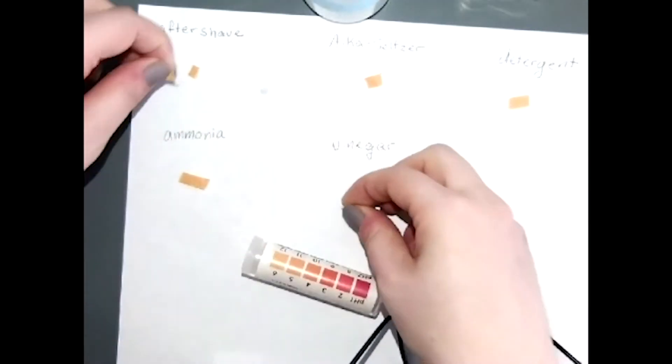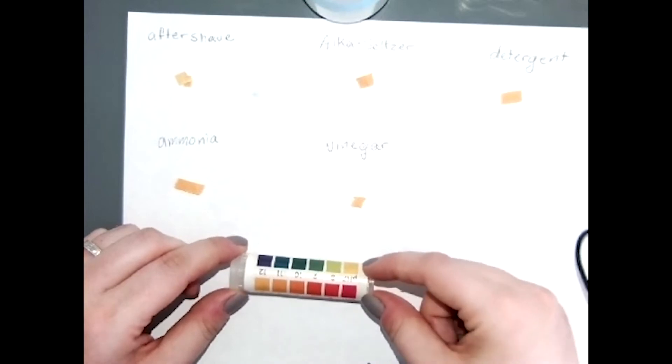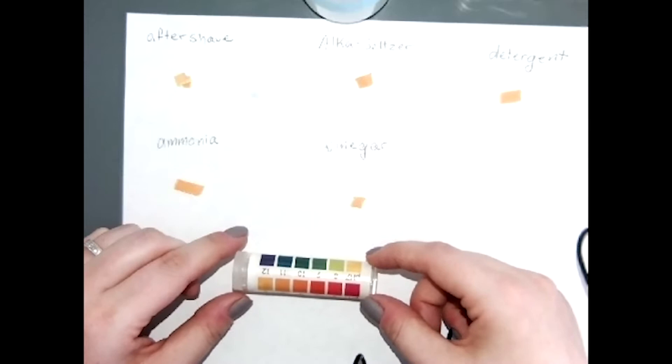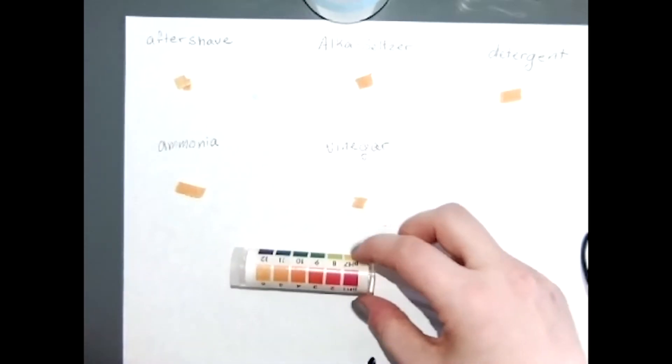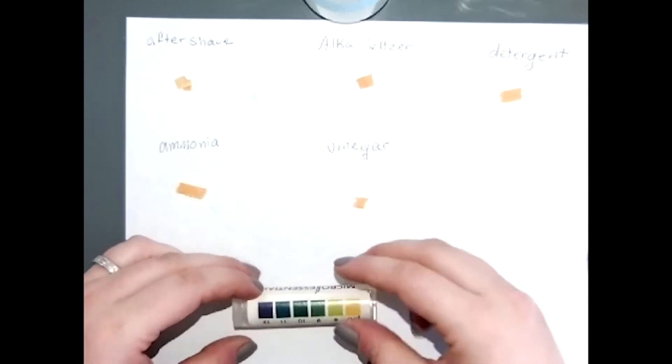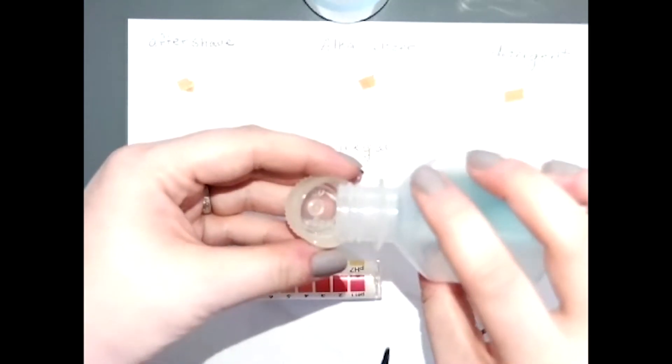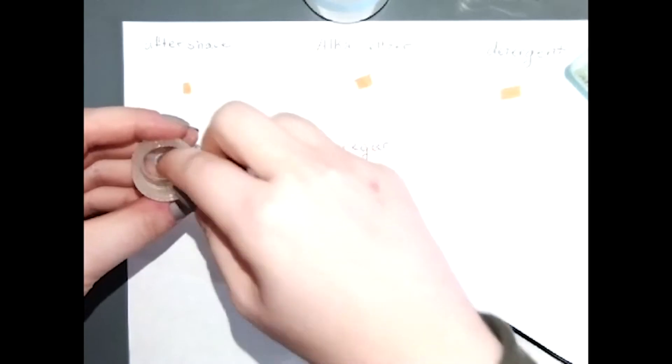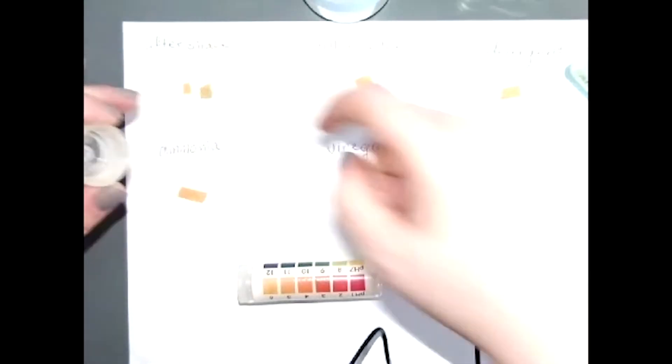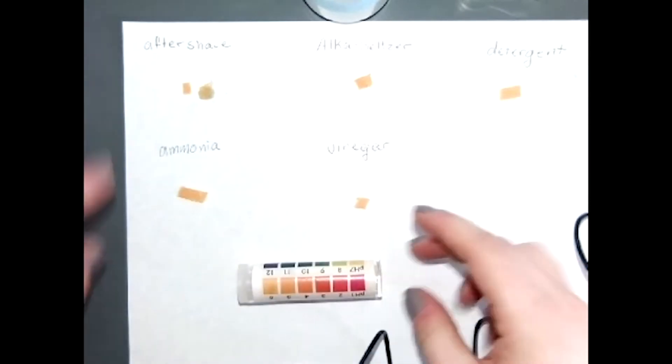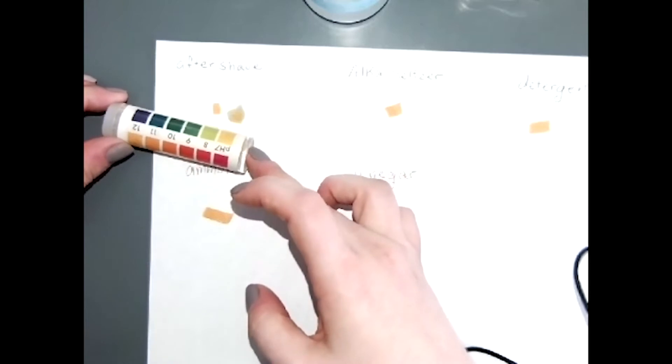You just tear off a section to use for each part of your experiment. There's a color comparator on the side of the bottle that the strips come in, and you need to color match very quickly after you have taken the liquid and placed it on the paper. First things first, we have the aftershave. That aftershave appears to have turned the paper a bright yellow color that seems to correspond with a pH of seven.